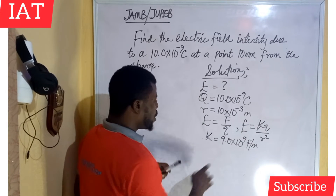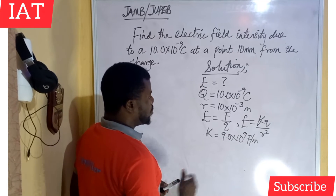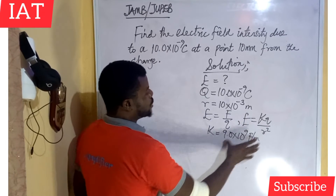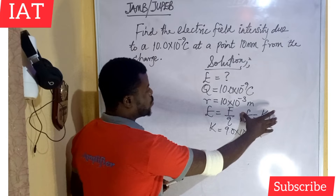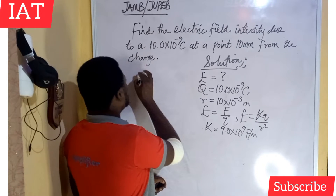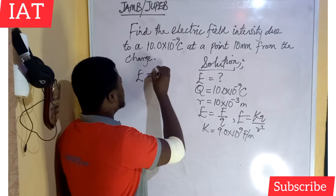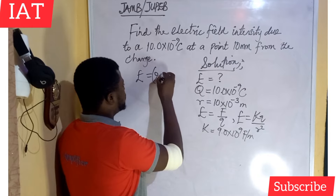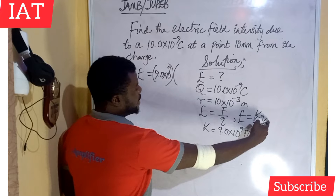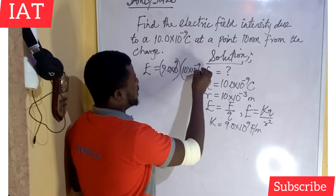Now let's substitute all the parameters into the equation E = KQ/R². We have E equals K, which is 9.0 times 10 to the power of 9, multiplied by the charge which is 10 times 10 to the power of minus 9, divided by R squared.